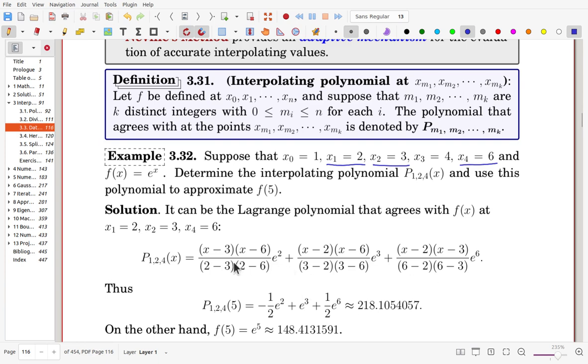By using this interpolating polynomial, we may approximate the function value at x equals 5. By plugging 5 for x, we can get that one, and the value is about 218. On the other hand, the true value is about 148. So the polynomial is overestimating the function value.